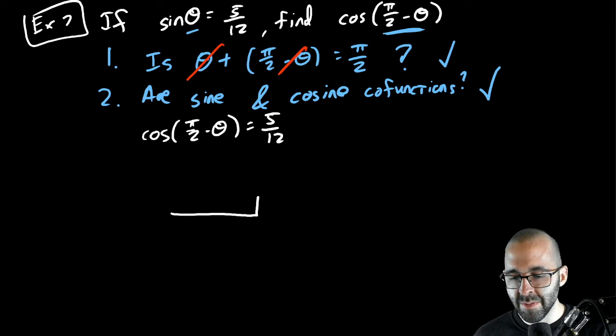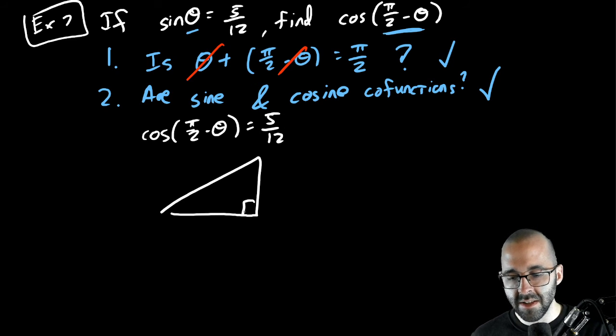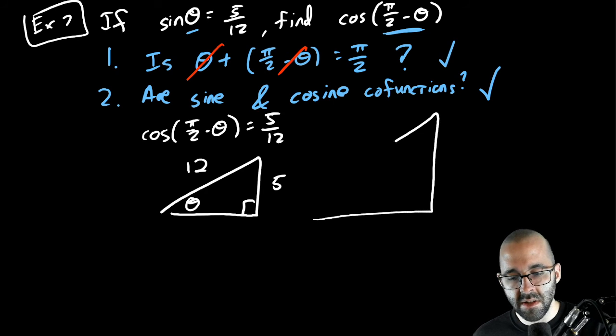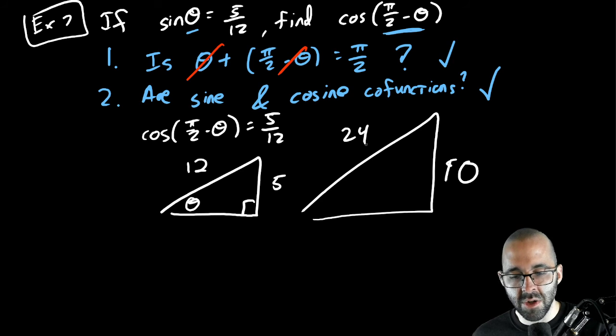And you can do that for all similar examples. And you could also see this by drawing a little triangle. Let's say theta is right here. I don't know what theta is, but I know that sine of theta is five twelfths, so this is one such triangle, or maybe it's a bigger triangle, 10 and 24, who knows how big the triangle is, but the ratio is the same.